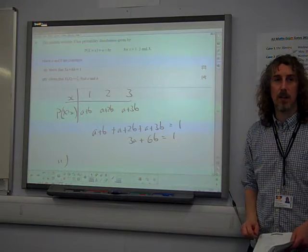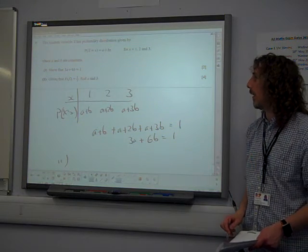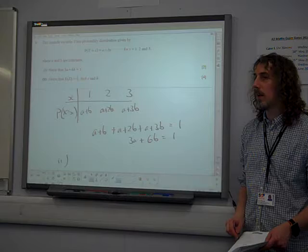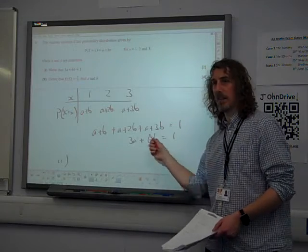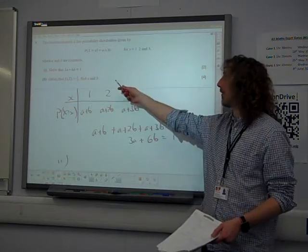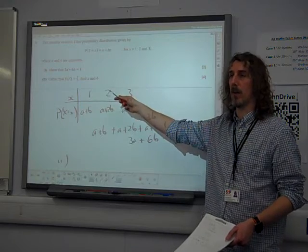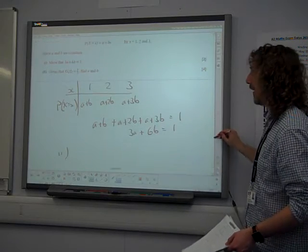Now, given that e of x is 5 thirds, find a and b. Well, hang on. This is the wrong equation that links a and b. And here they've just given me another bit of information. I'm thinking simultaneous equations.